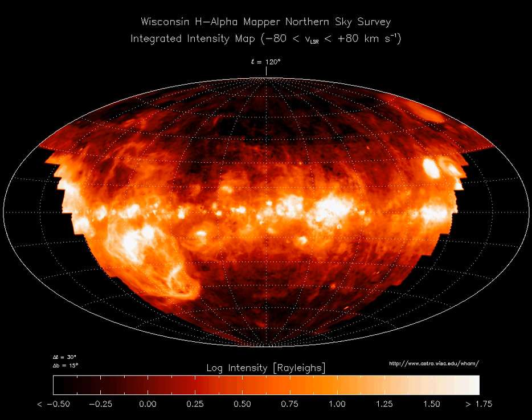Asymmetric absorption line profiles are the result of the superposition of multiple absorption lines, each corresponding to the same atomic transition — for example the K line of calcium — but occurring in interstellar clouds with different radial velocities. Because each cloud has a different velocity, either towards or away from the observer on Earth, the absorption lines occurring within each cloud are either blue-shifted or red-shifted, respectively, from the line's rest wavelength, through the Doppler effect. These observations confirming that matter is not distributed homogeneously were the first evidence of multiple discrete clouds within the ISM.